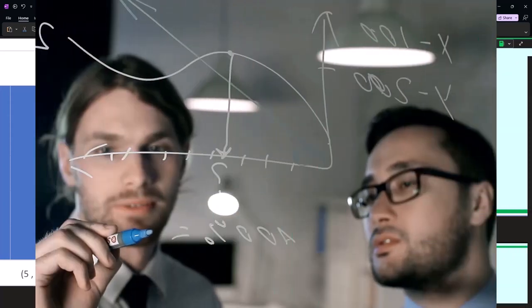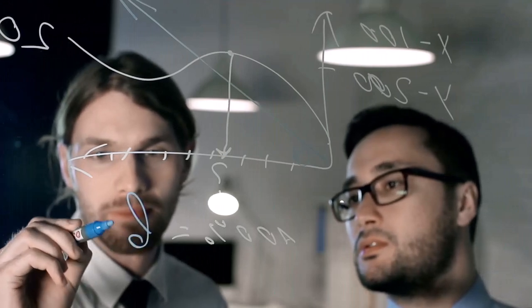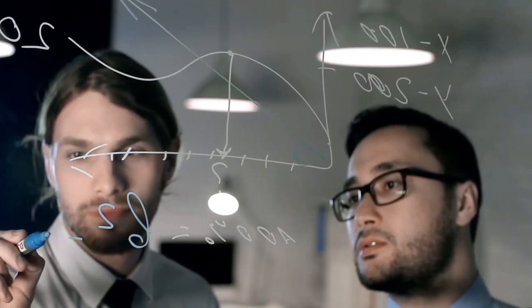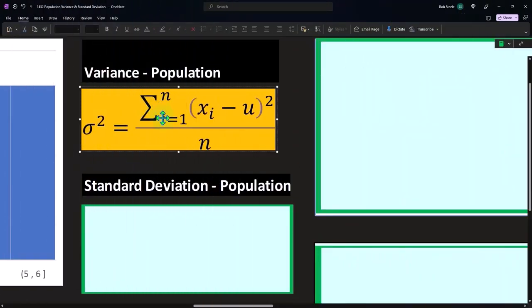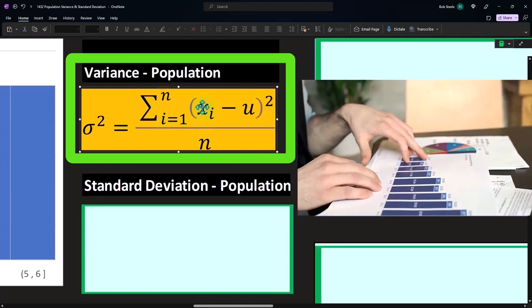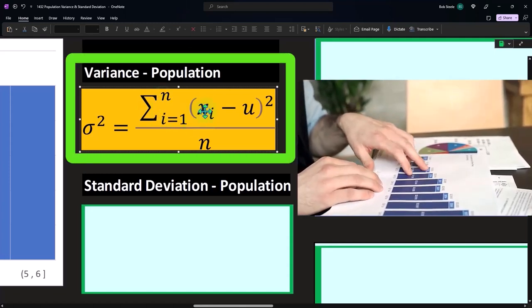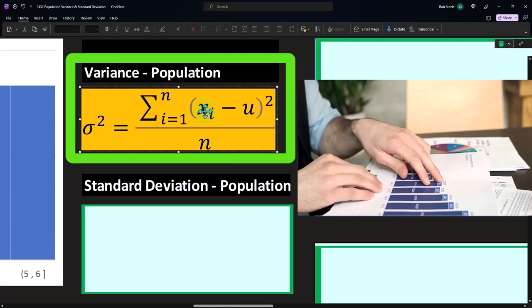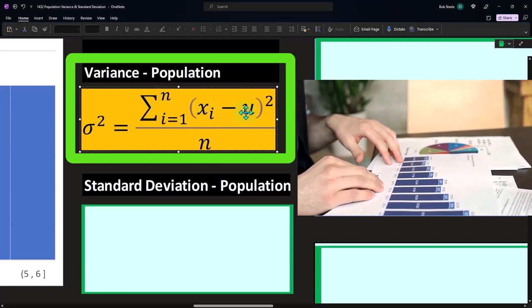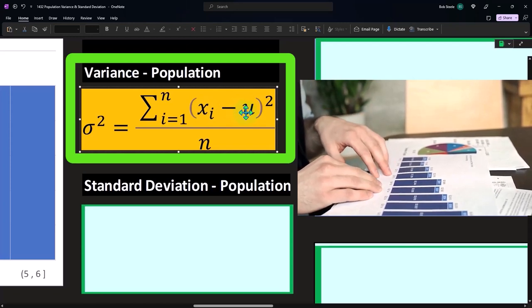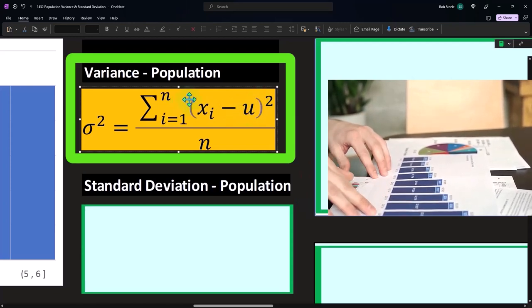This is the variance represented with sigma squared. We're going to do our sum from i=1 to n, so we've got x sub i, which represents each number in our data set. We had four numbers minus mu, which represents the mean.